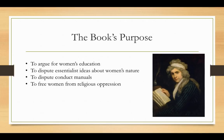The book also wanted to dispute the essentialist ideas about women's nature. Essentialism is the idea that all women at their very base and core have certain features — for example, that they are weaker, or maternal, or emotional. A Vindication of the Rights of Women disputes these ideas that women are inherently the lesser sex.